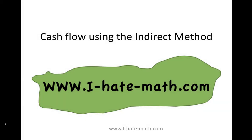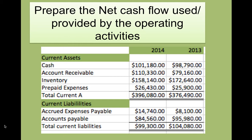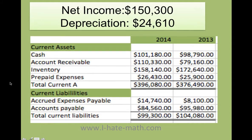Hi guys! Welcome to A Hate Math Group. In this video we're going to learn how to find the cash flow by using the indirect method. So here you have two balance sheets, the one for 2013 and the one for 2014. The first step is to figure out what is the net income and the depreciation, because these two items are going to be used to build the cash flow statement.